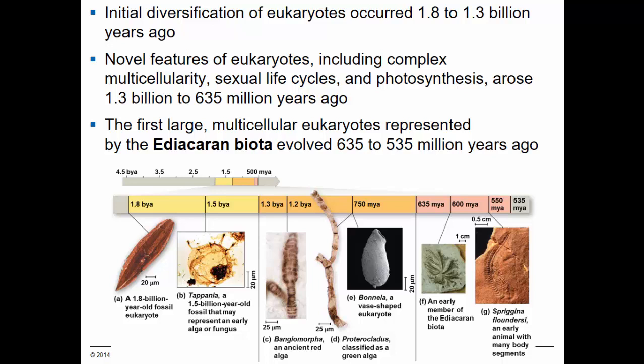The fossil record shows a rapid increase in the diversity of types of eukaryotes from 1.8 to 1.3 billion years ago. New features of eukaryotes also appeared in the period from 1.3 billion to 635 million years ago. These new features include complex multicellularity with cellular specialization, sexual reproductive life cycles, and photosynthesis. The first large multicellular eukaryotes appeared in the Ediacaran biota, a group of organisms that evolved between 635 and 535 million years ago. Notice that some of these organisms resemble early plants.